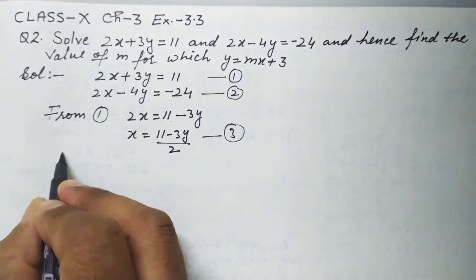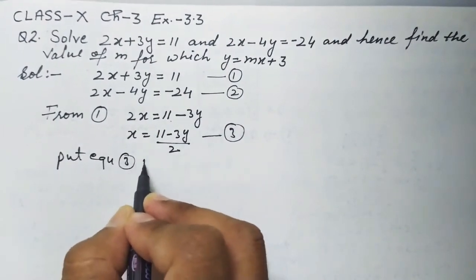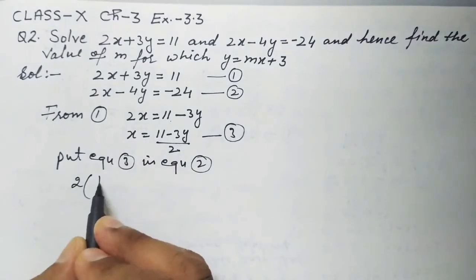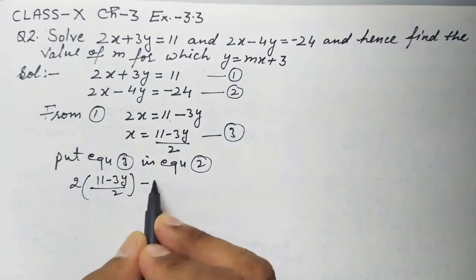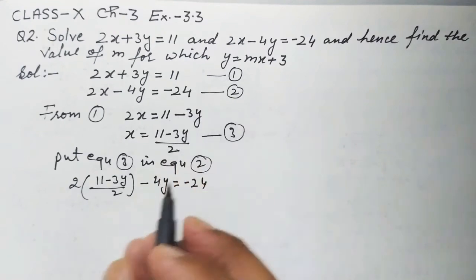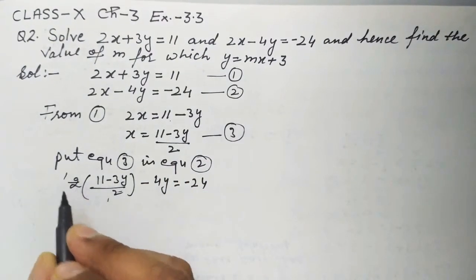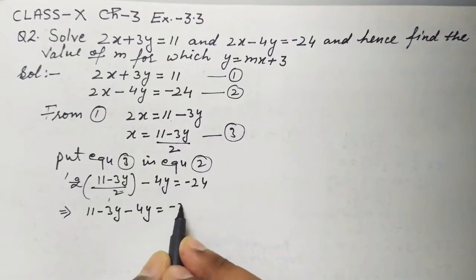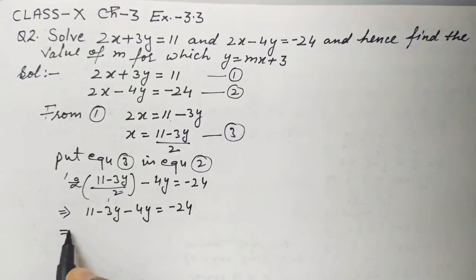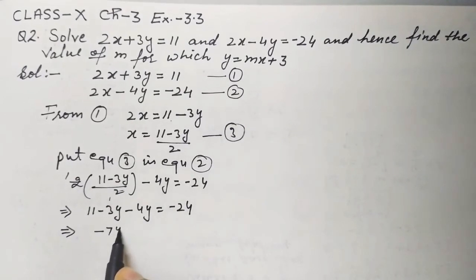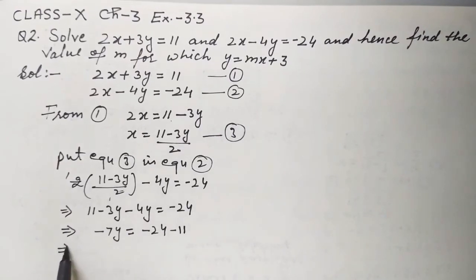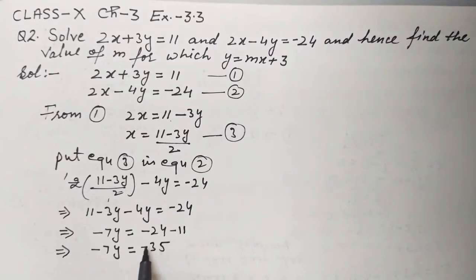Now I will put equation 3 into equation 2. In place of x, I fill this value: 2 into (11 minus 3y over 2) minus 4y is equal to minus 24. The 2s cancel, opening the bracket gives 11 minus 3y minus 4y is equal to minus 24. Taking the constant to the right-hand side: minus 3y minus 4y is minus 7y, and minus 24 minus 11 gives minus 35.